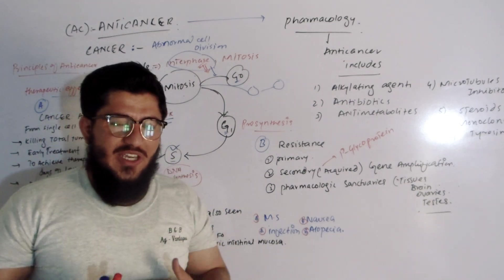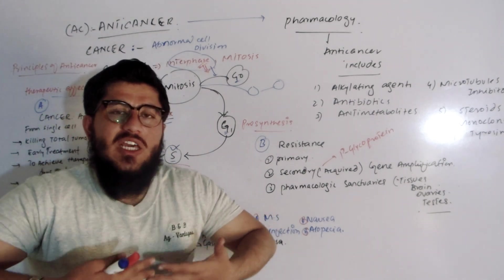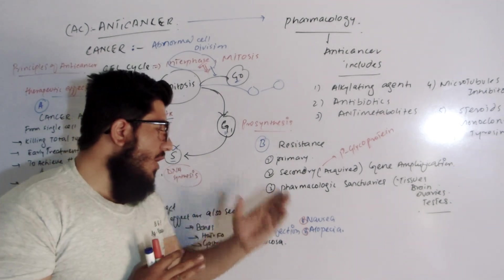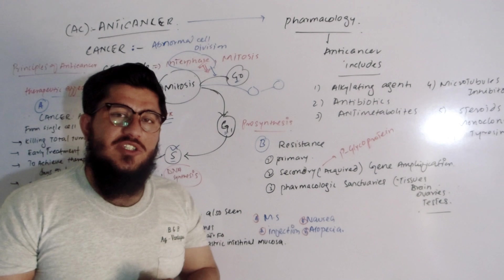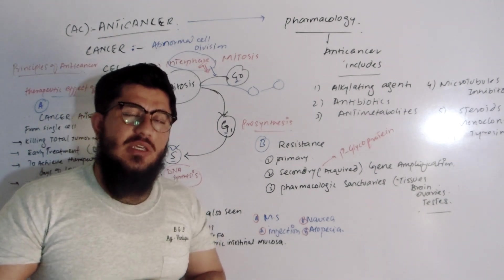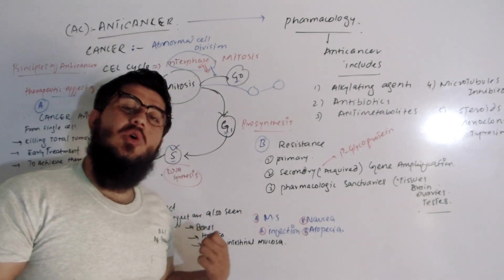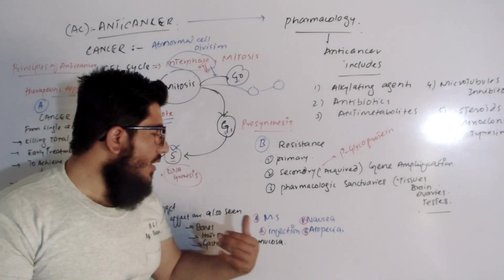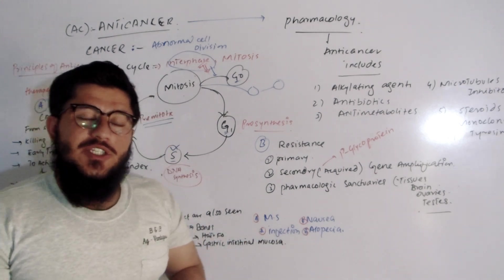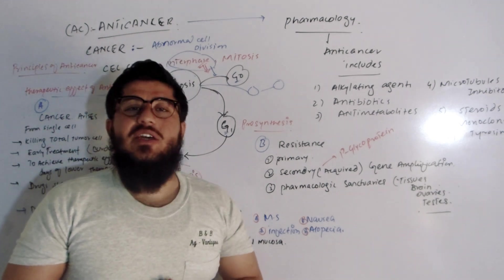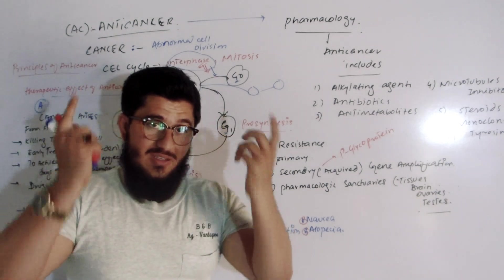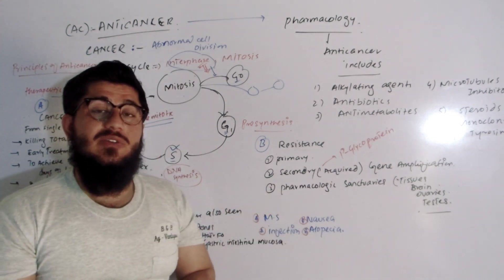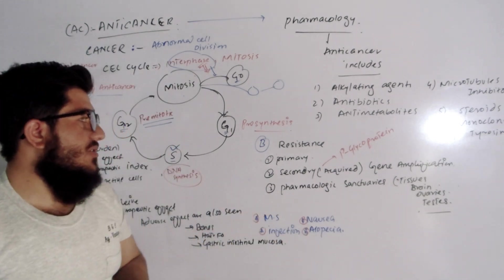Common adverse effects of anti-cancerous drugs include: first, bone marrow suppression; second, nausea and the feeling of emesis — they can cause nausea and vomiting; third, increased risk of infection; and fourth, alopecia, which means loss of hair. These are the common side effects caused by anti-cancerous drugs.